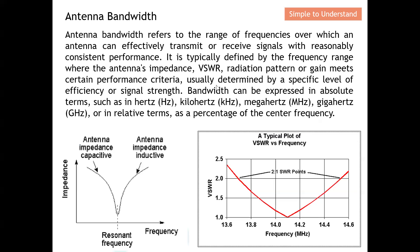They are usually determined by a specific level of efficiency or signal strength. If we meet this criteria, then we quantify this as the antenna bandwidth. Bandwidth can be expressed in absolute terms — hertz, kilohertz, megahertz, or gigahertz — and sometimes in relative terms, such as a percentage of the center frequency.